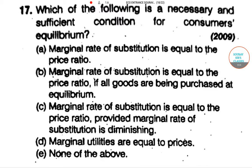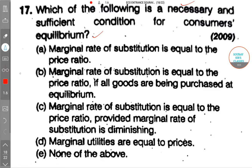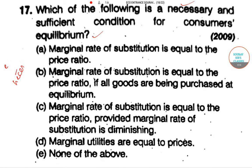The next question asks: which of the following is the necessary and sufficient condition for consumer equilibrium? Necessary condition means that if the outcome is there, then the condition will also be there.